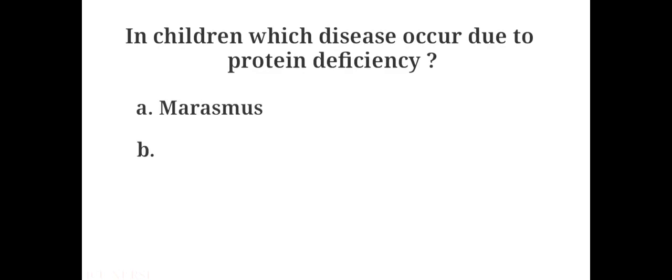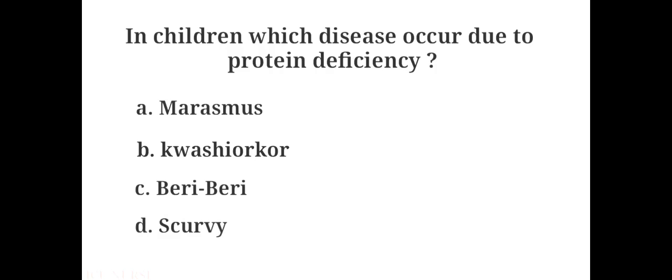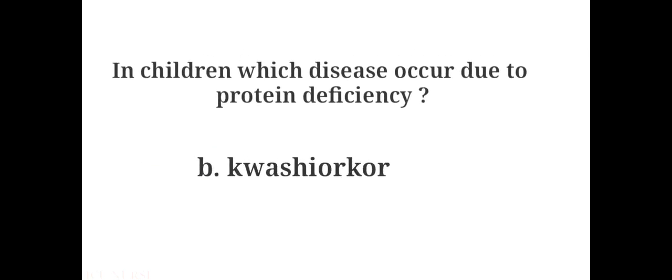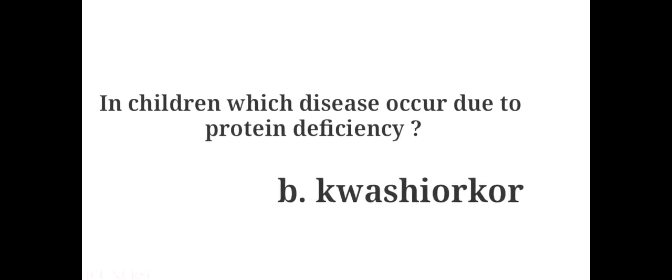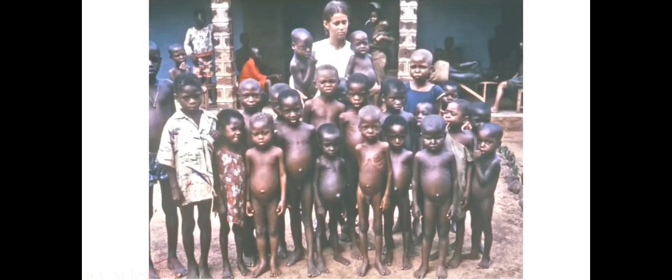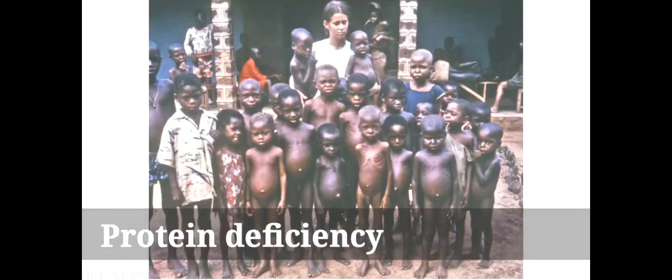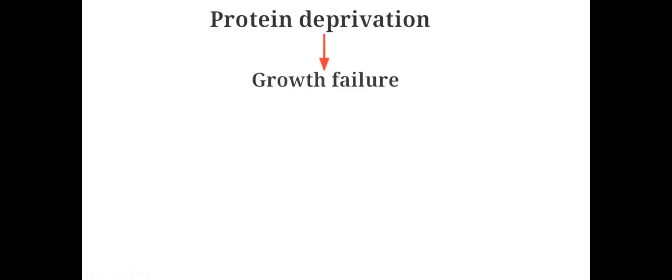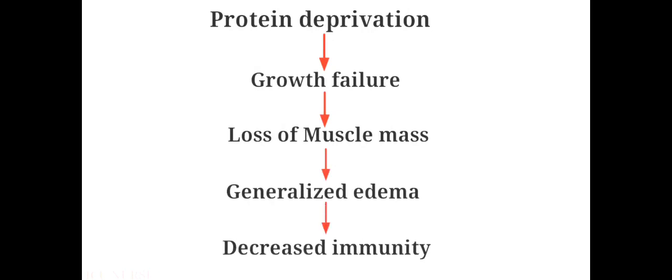In children, which disease occurs due to protein deficiency? A. Marasmus, B. Kwashiorkor, C. Beriberi, D. Scurvy. The answer is B. Kwashiorkor. Kwashiorkor is a condition resulting from inadequate protein intake. Early symptoms include fatigue, irritability and lethargy. As protein deprivation continues, one sees growth failure, loss of muscle mass, generalized edema, and decreased immunity. A large protuberant belly is common.